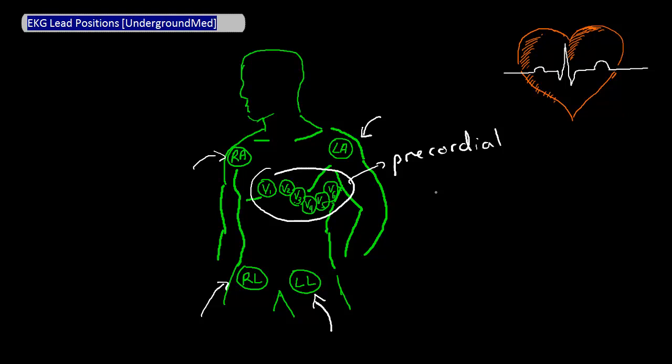So six precordial leads plus four limb leads equals ten leads. In fact, some EKG machines don't even use the RL lead, which would make for a nine lead EKG.